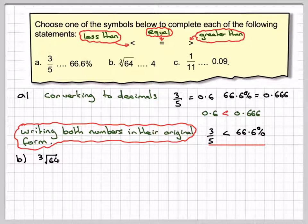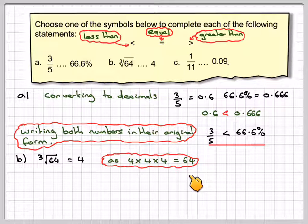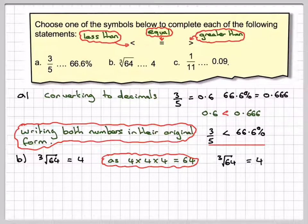The cube root of 64 is what number multiplied by itself twice will make 64. The answer is 4, because 4 times 4 times 4 makes 64. Therefore, the cube root of 64 is equal to 4, so the equal sign will go in that one.